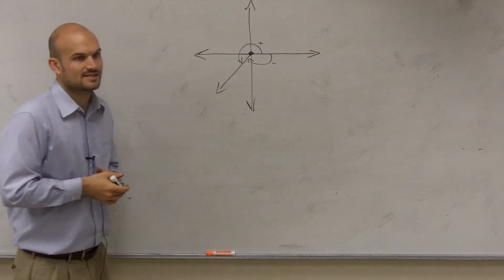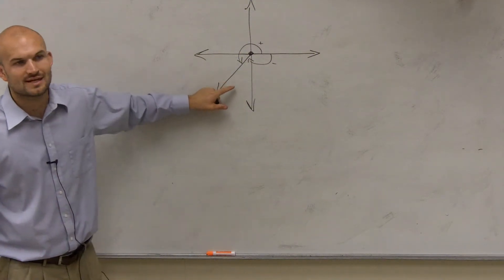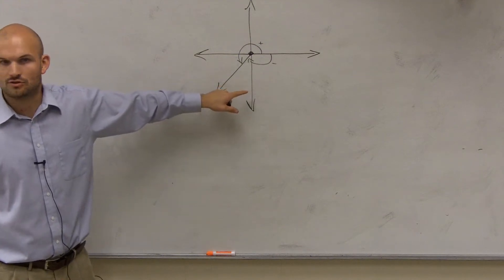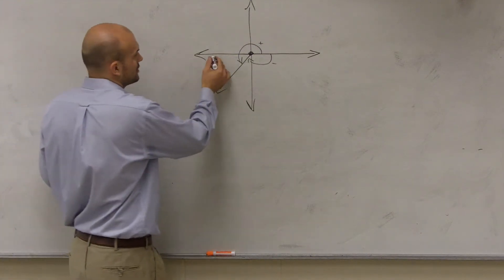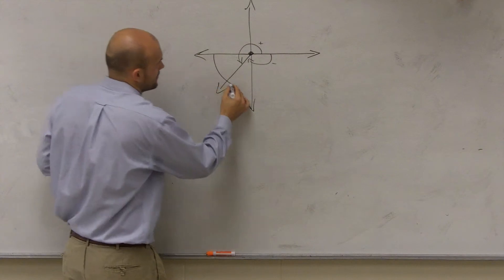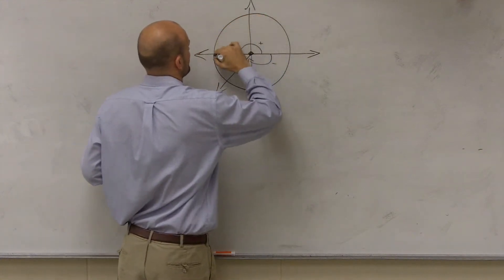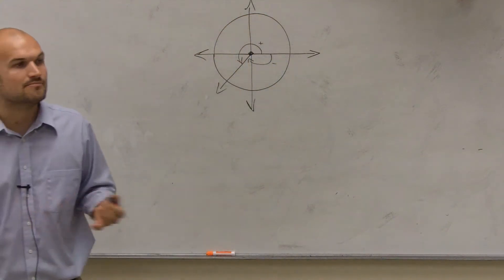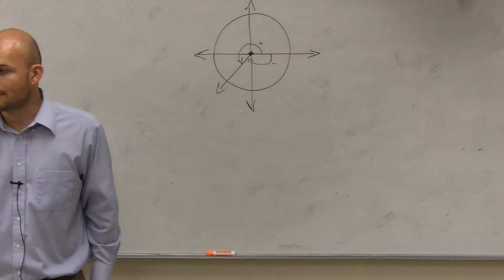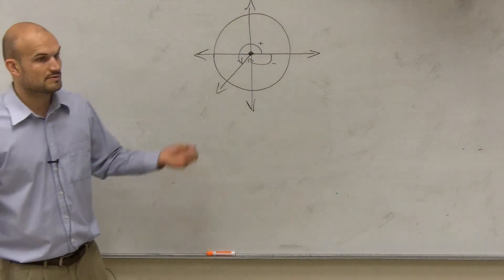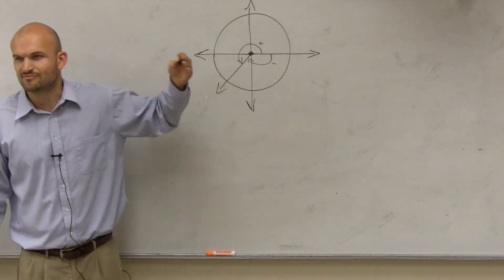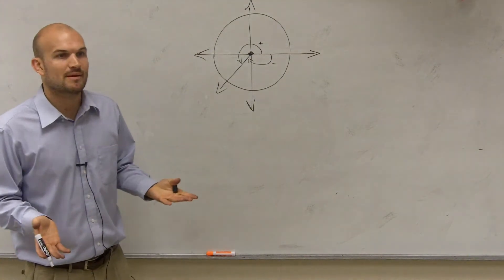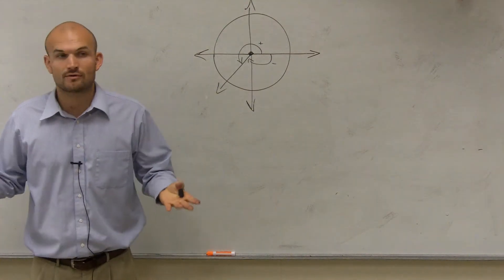Then the next thing we said is this angle — let's have it intercept a circle, which we're going to call the unit circle. So then we started talking about different types of measurements of angles. One type was degrees, which everybody is pretty familiar with. But then we started talking about a special type of measurement, which we called a radian.